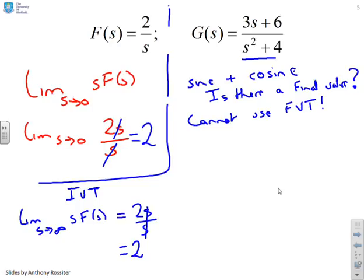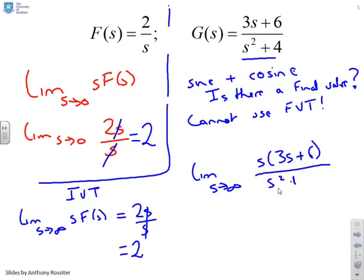Can we use the initial value theorem on G(s)? Yes we can. We do the limit as s goes to infinity of s times (3s + 6) / (s² + 4). The key observation is that as s goes to infinity, the highest power dominates in both the numerator and denominator. So you get the limit of 3s² / s², which equals three.